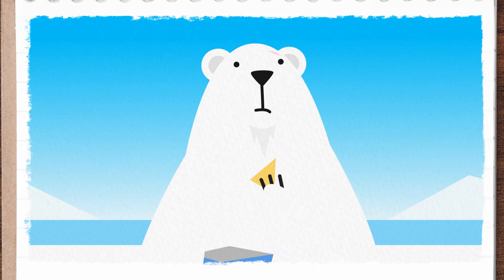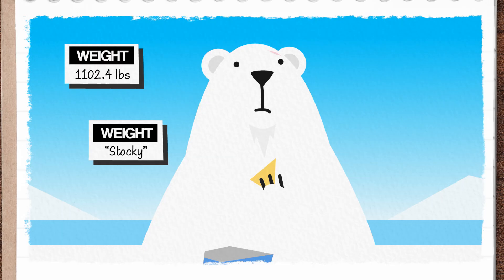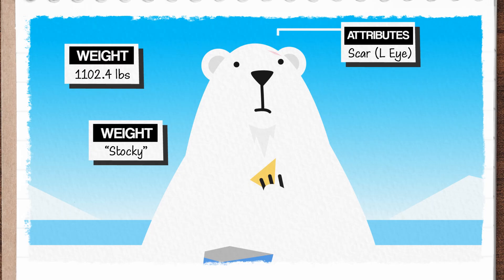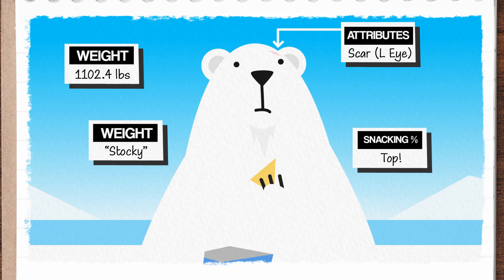But as we're writing down everything there is to know about Boris right now, the questions start. Do we say Boris is 1,102.4 pounds, or do we make things sound a little bit more vague and say he's a stocky guy with white fur? Do we mention that he's got a scar over his left eye, or what percentile of polar bears he's in when it comes to downing seal snacks? Maybe we're also thinking about the temperature outside, where it needs to be super cold for Boris to happily spend his days in hot pursuit of those pesky seals.